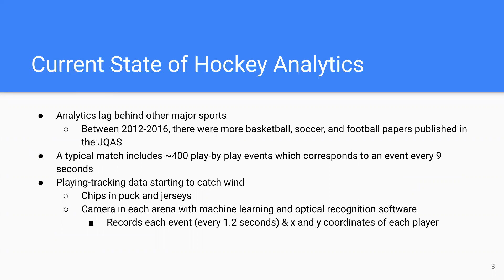Starting with the current state of hockey analytics — they lag a lot behind other major sports, mostly due to popularity. NHL lags behind basketball, baseball, and soccer in viewership. Between 2012 and 2016, there were more basketball, soccer, and football papers published in the Journal of Quantitative Analysis in Sports. Baseball is omitted since they have their own journal, so it's not really representative of how many baseball papers there are.